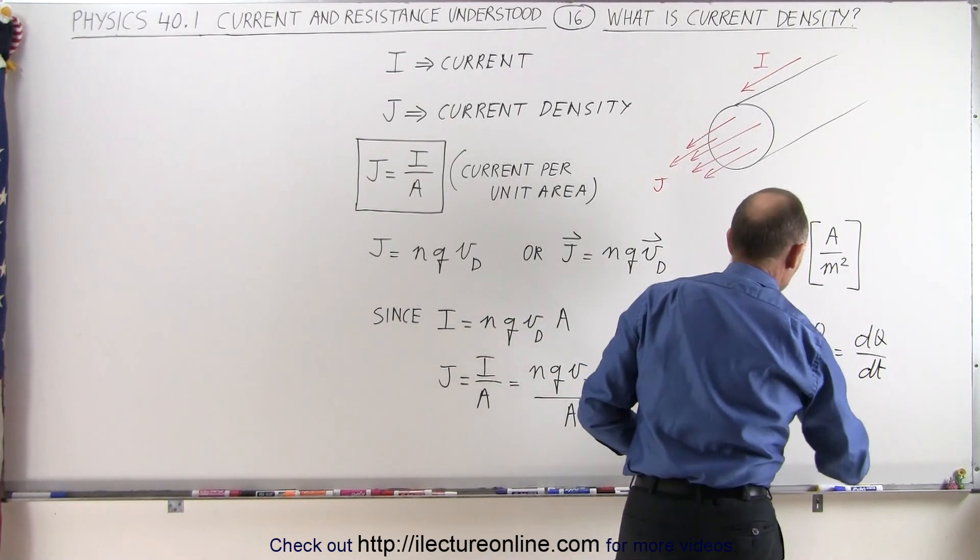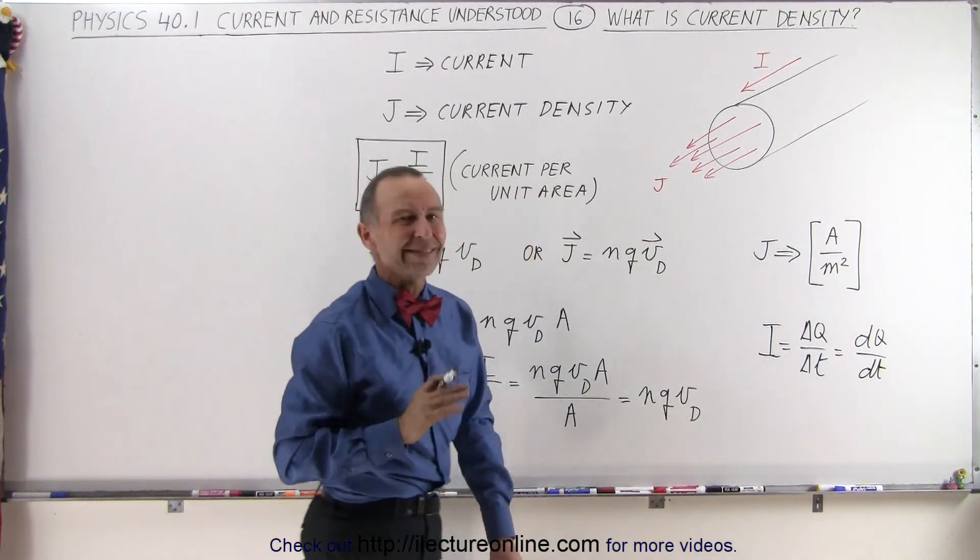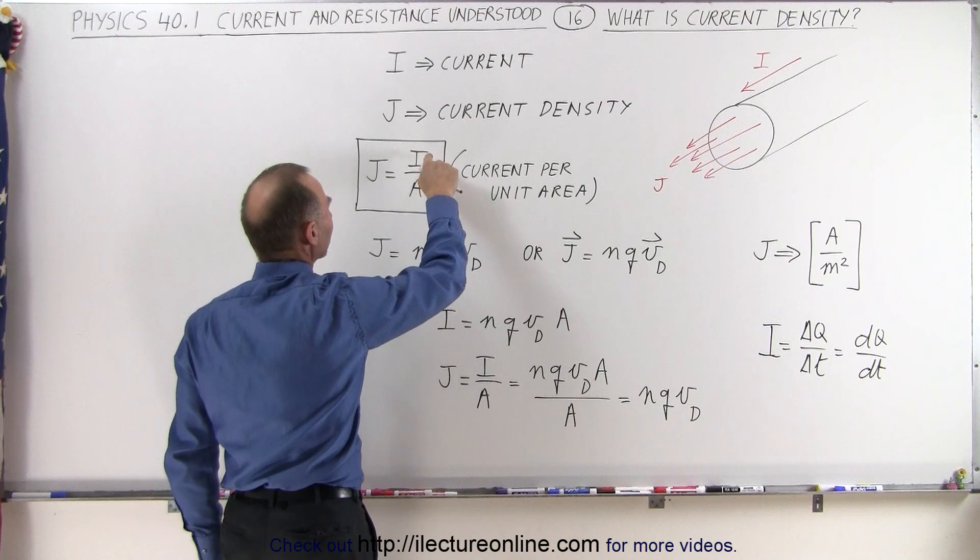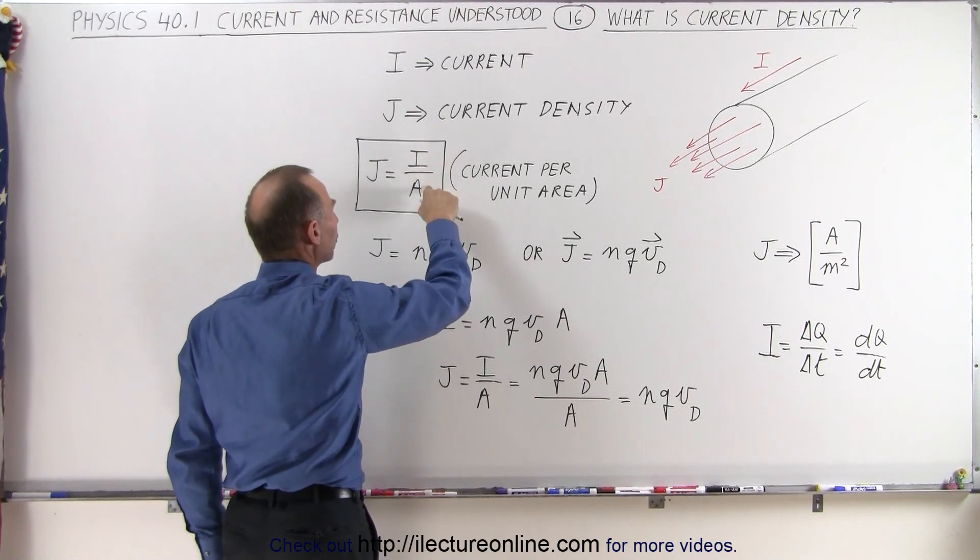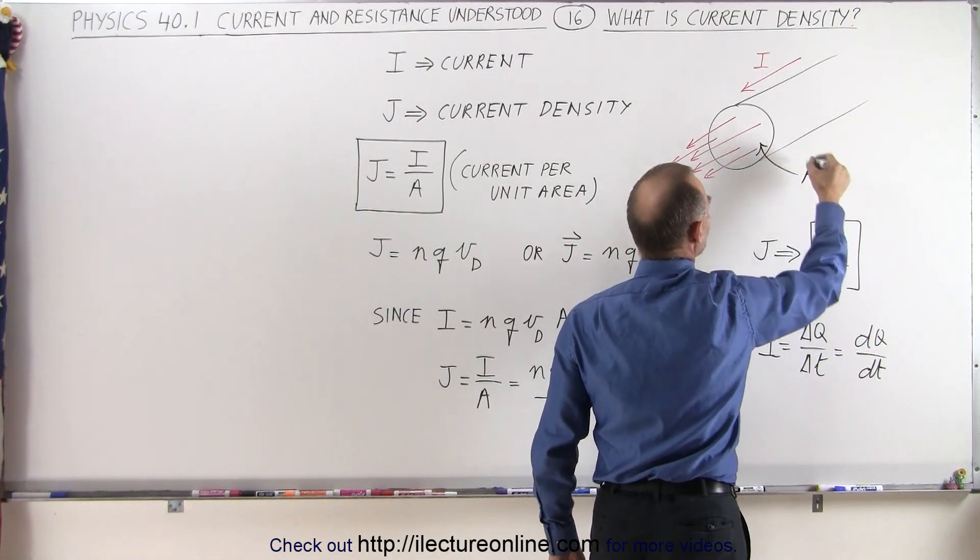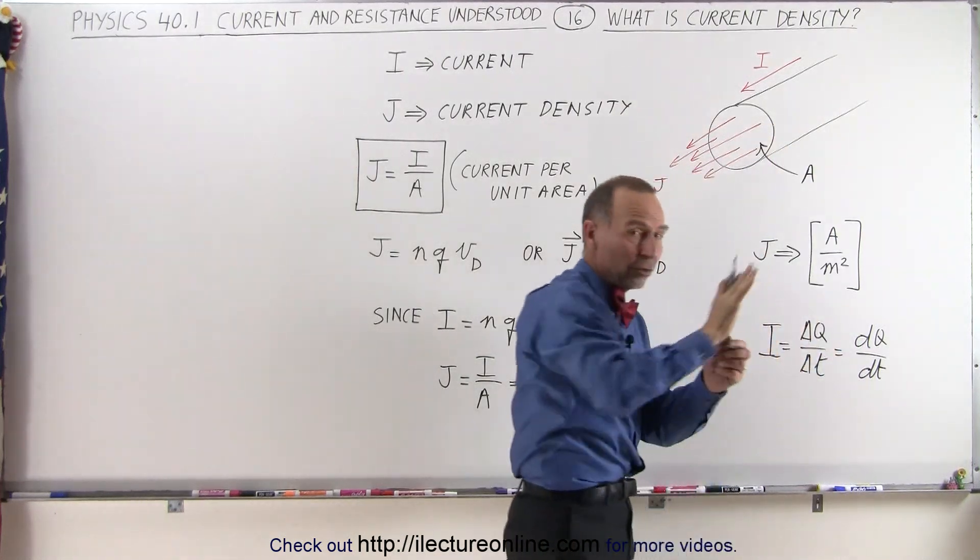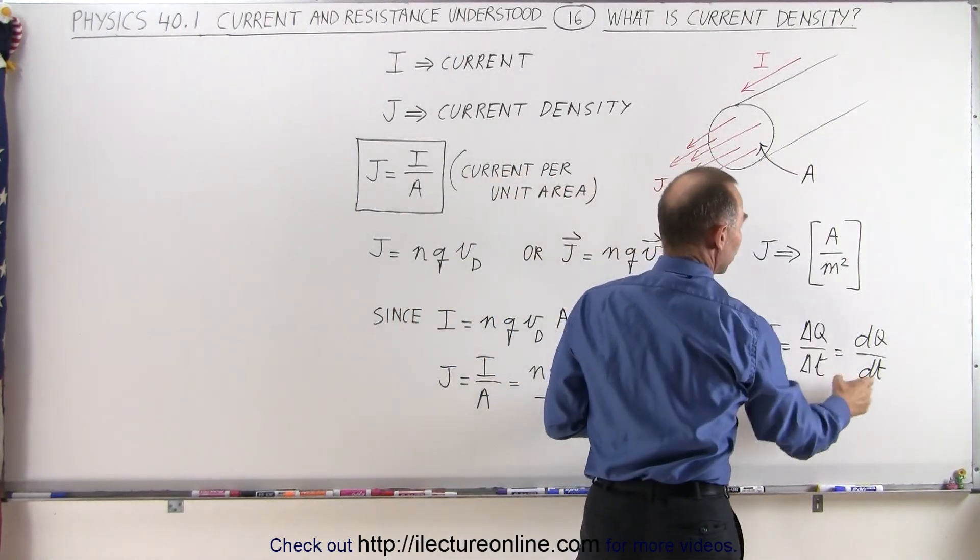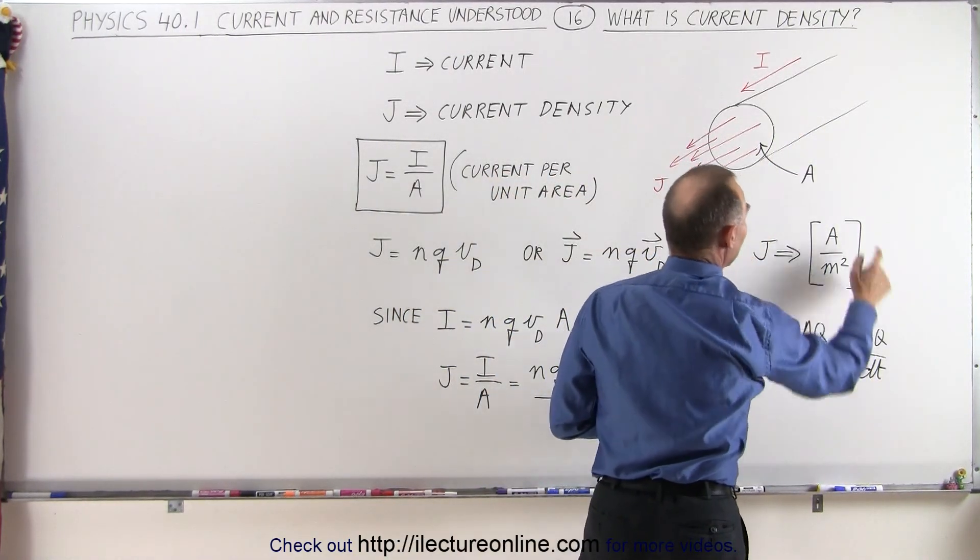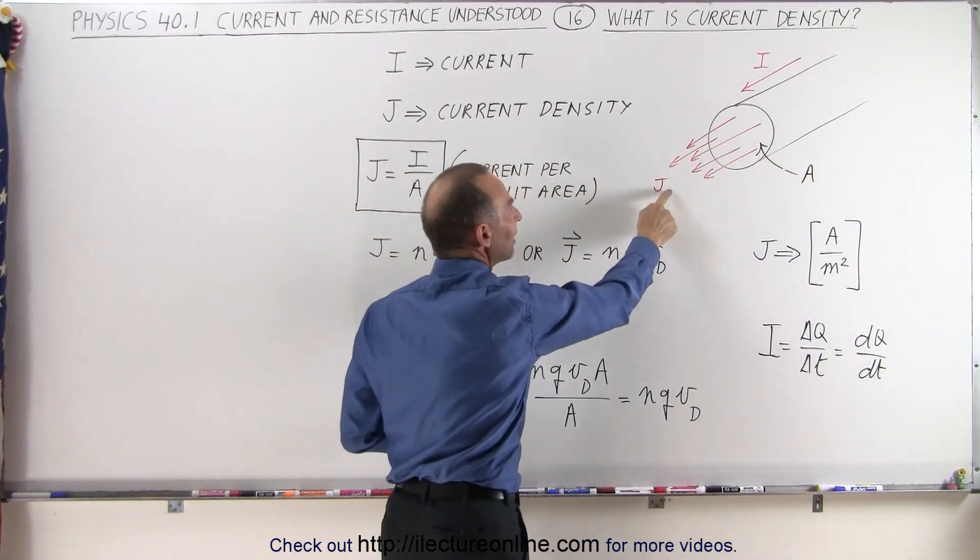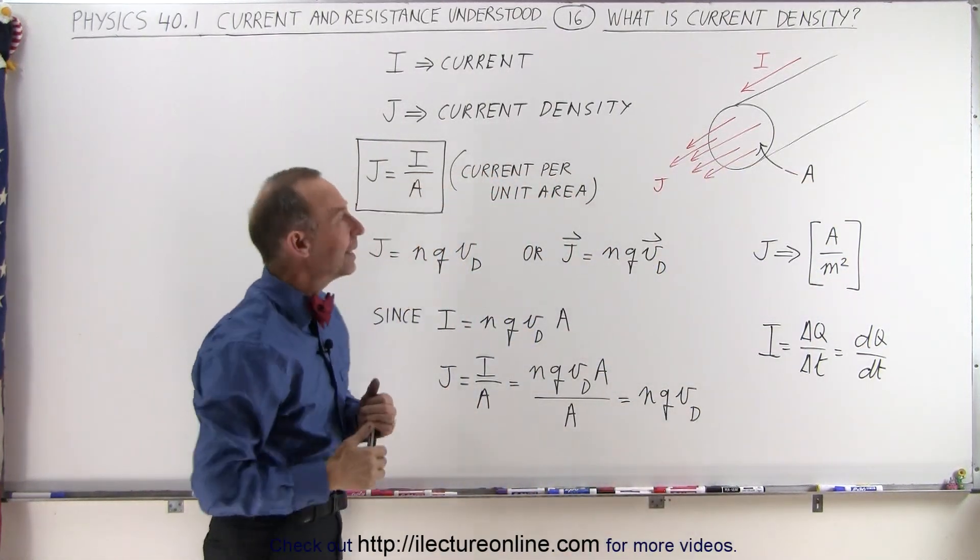Now, what does current density mean? The definition is that it's the amount of current flowing through a certain area. So we take into account the cross-sectional area of a conductor, and if we take the total current in terms of charge per unit time and divide it by the area, we get what we call the current density, and we use the letter J to indicate that.